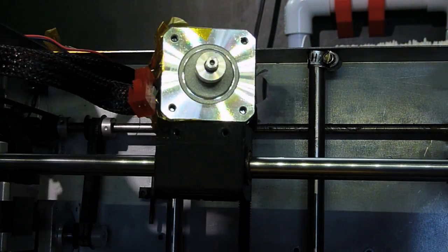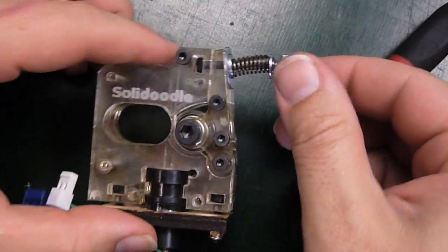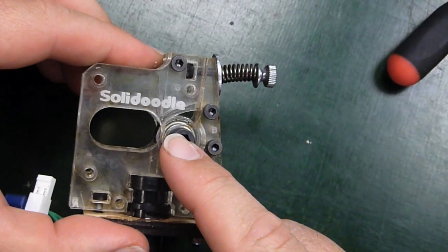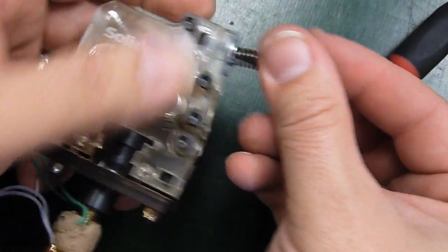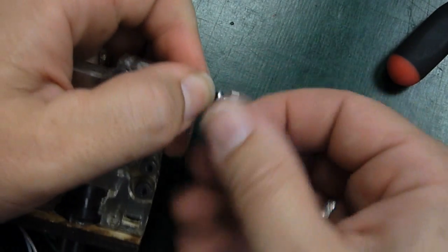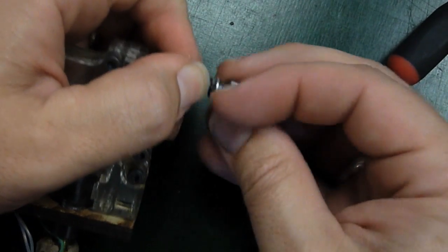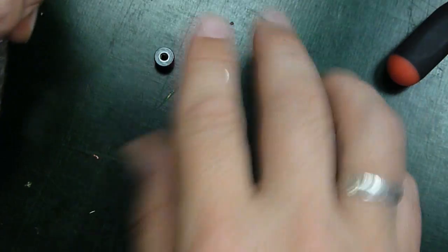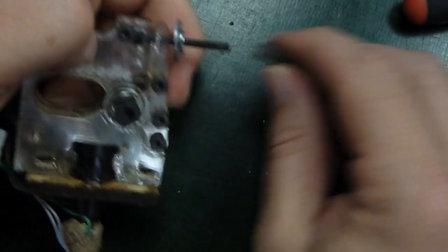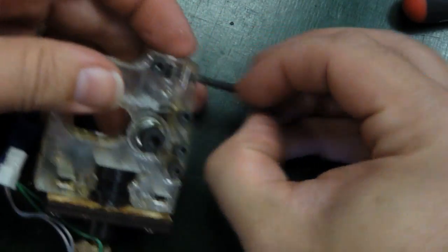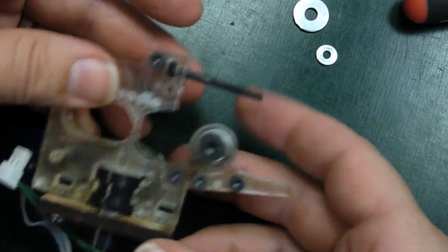And off it goes. Next I'll take off the idler arm. This is the part with the bearing that holds the filament against the gear. And take off the thumb screw, the washer, the spring and the washers. That allows that to open out.